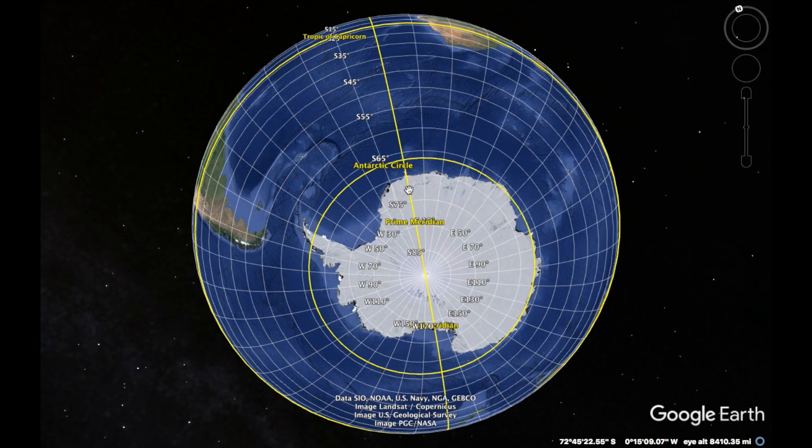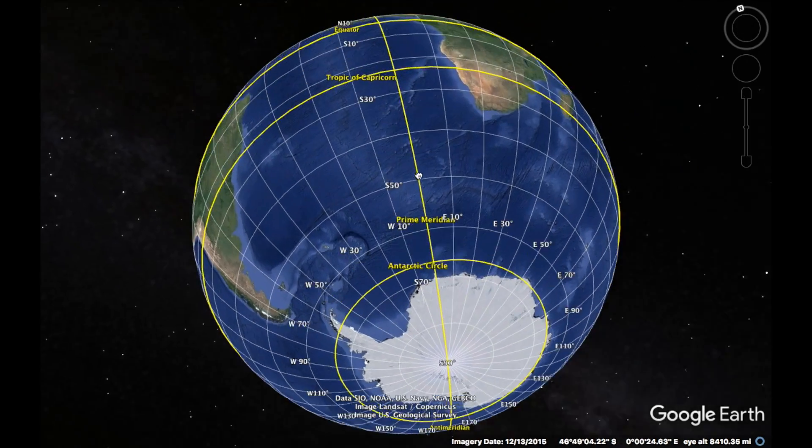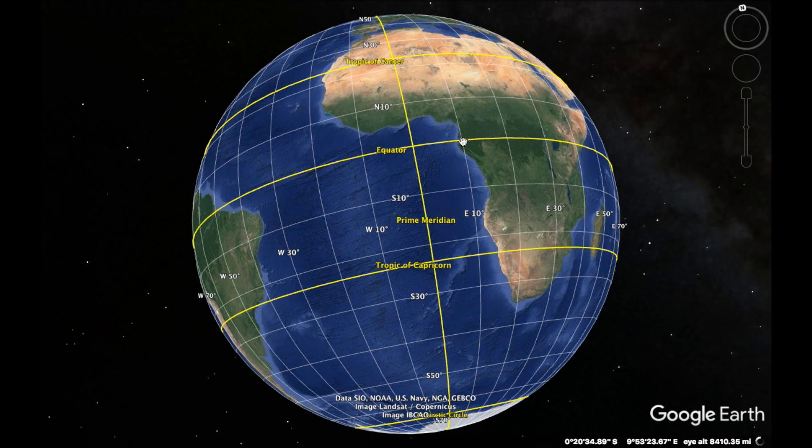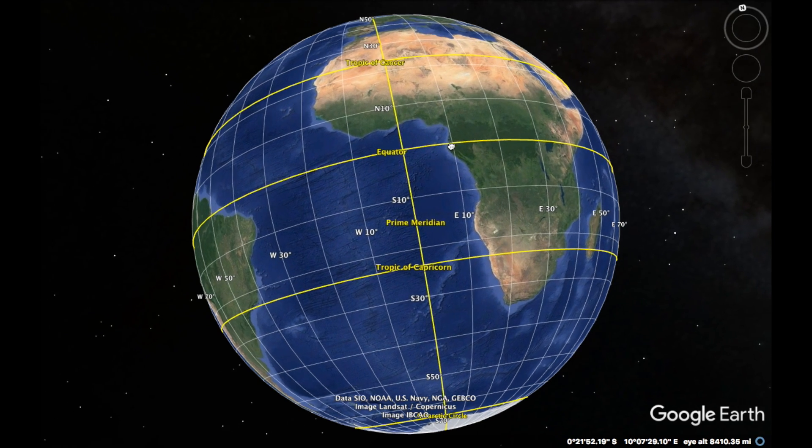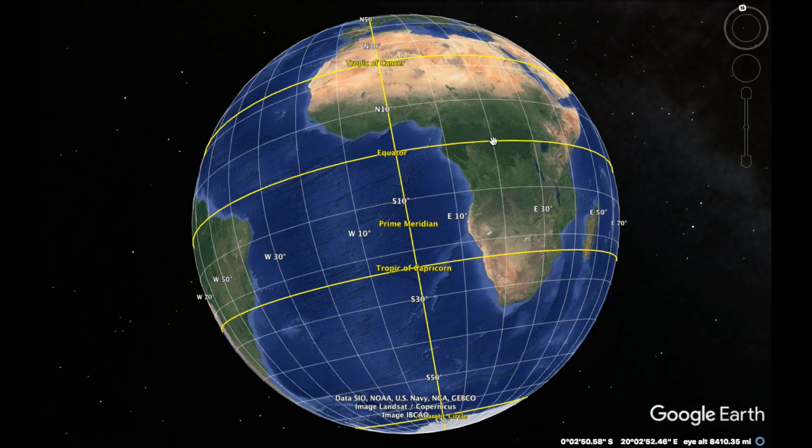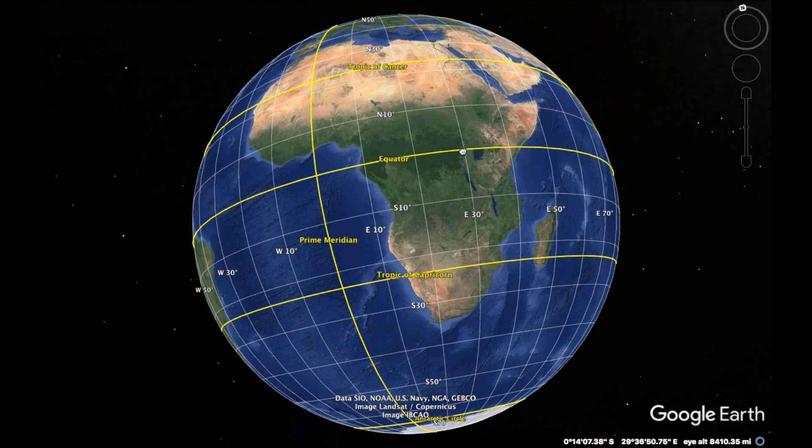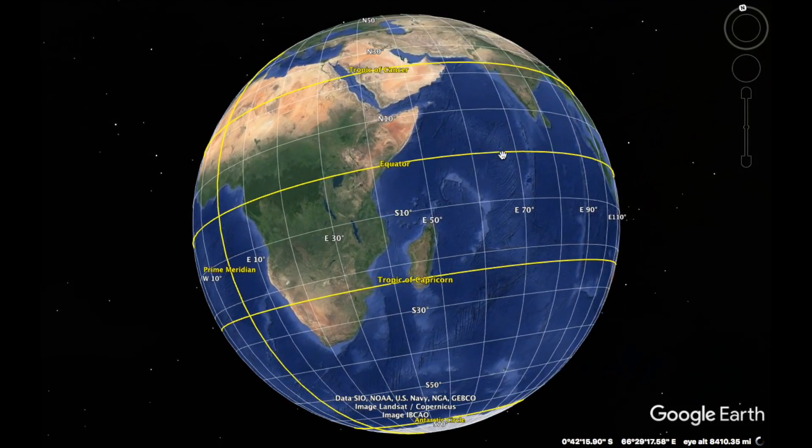They're measured east or west of the Prime Meridian. As I come back and look at this, you'll notice that in this view, each line of longitude is 10 degrees apart. So here I'm at 10 degrees east, 20 degrees east, 30 degrees east, and so on. Looking at it from this distance, I'm able to see 10 degree increments.